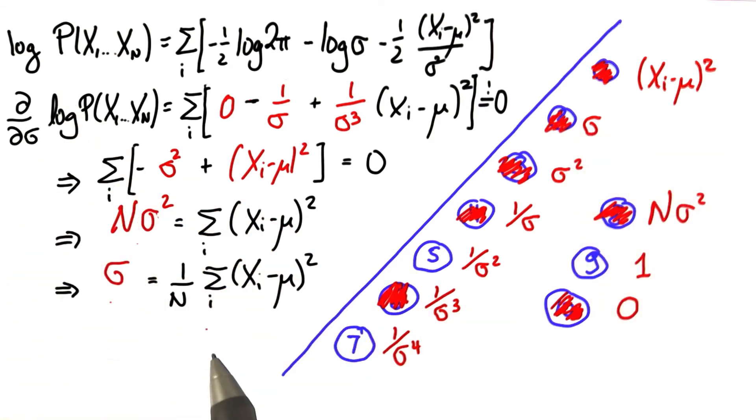This is the full proof that the empirical observed variance over the data is the maximum likelihood estimator for finding the parameters of a Gaussian.